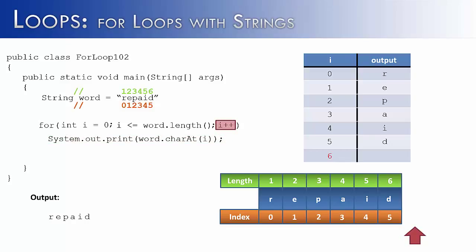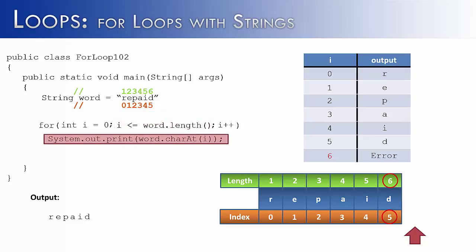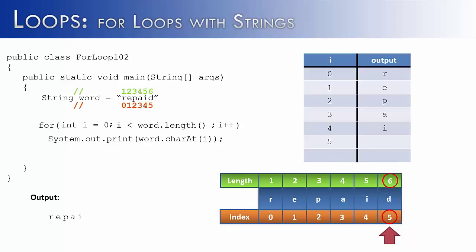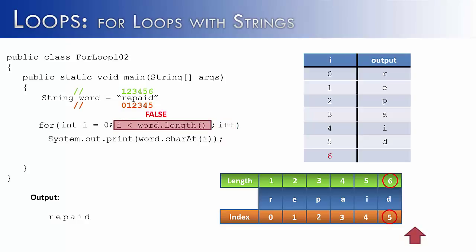After printing 'd', we add 1 to get 6, but the condition using less-than-or-equal-to would still be true — a common error. If we try word.charAt(6), there is no letter at index 6 because that's the length, and the length is always 1 longer than the last index. So we change the loop to use strictly less-than instead of less-than-or-equal-to. When i becomes 6, the condition is false and the loop stops, outputting 'repaid' correctly.